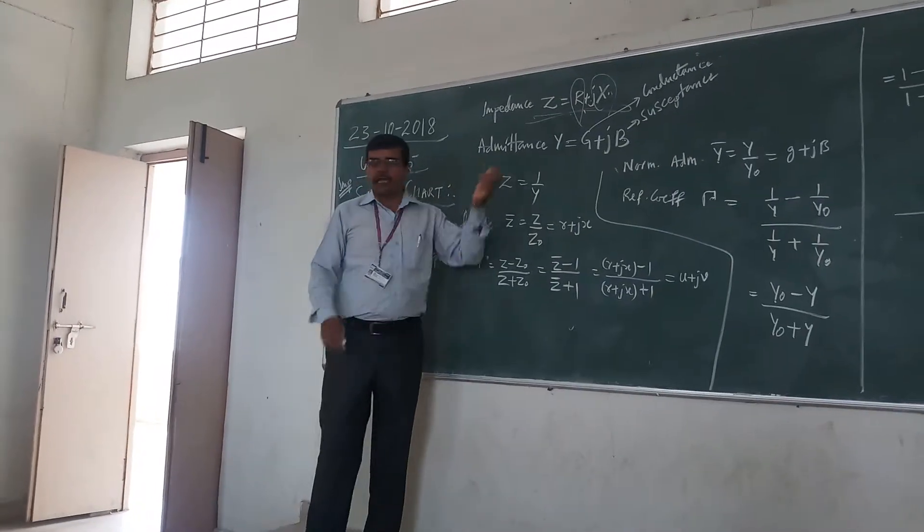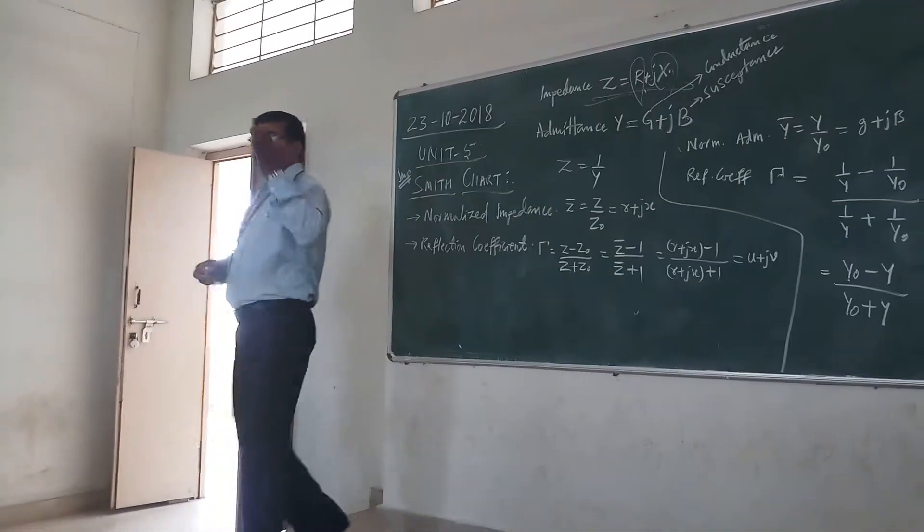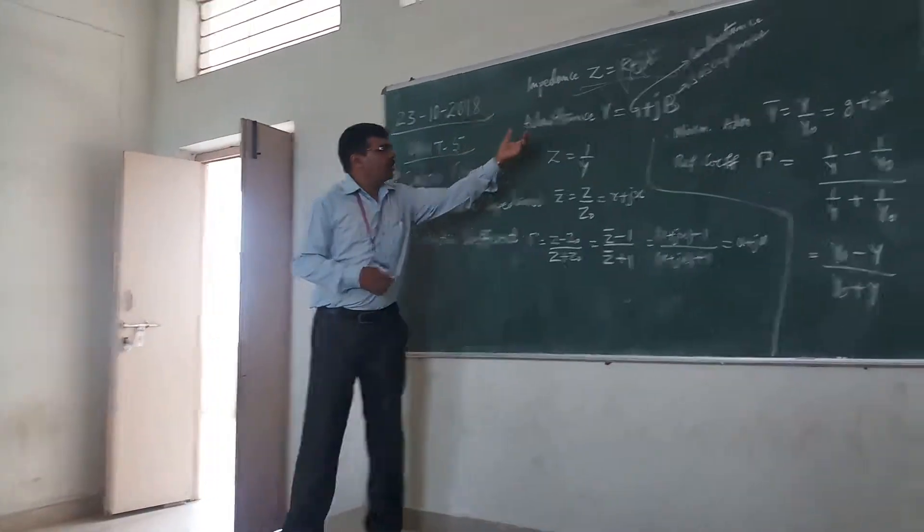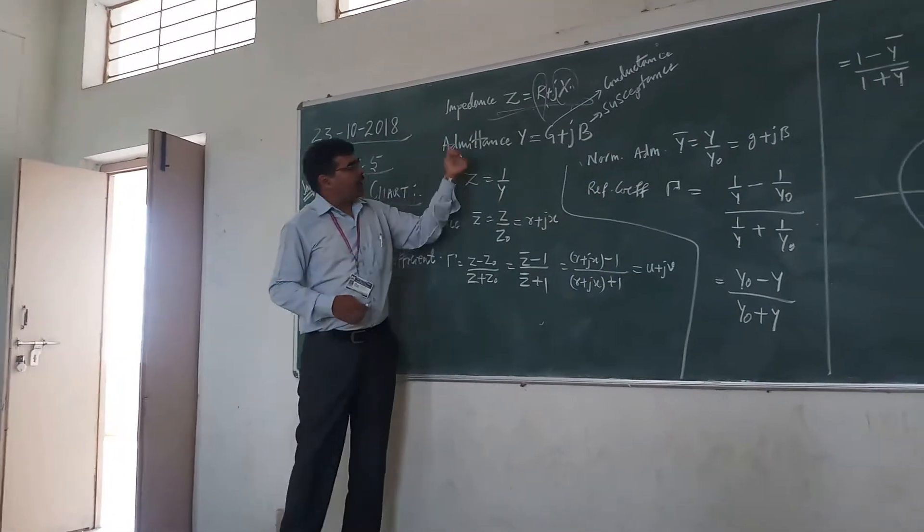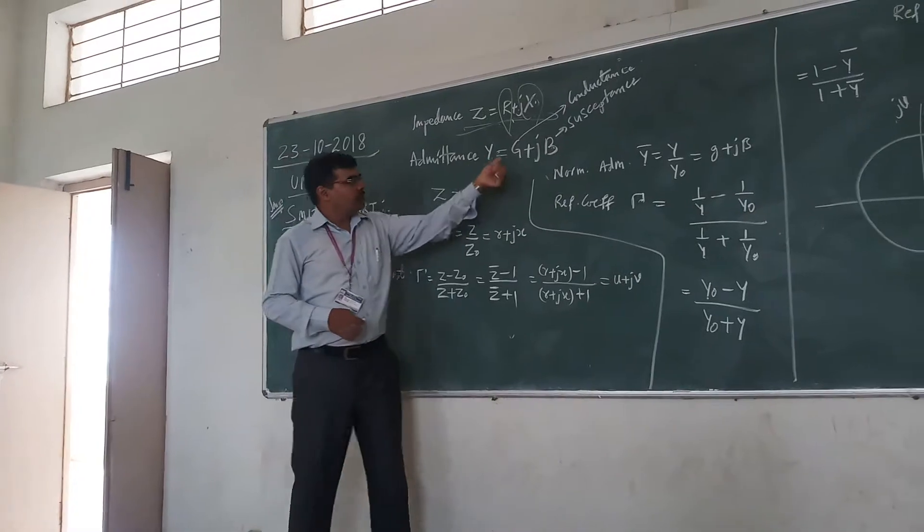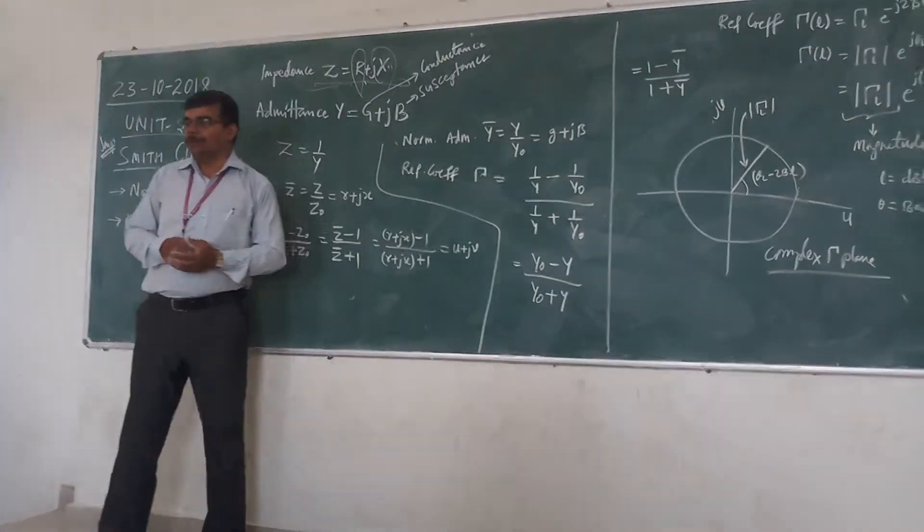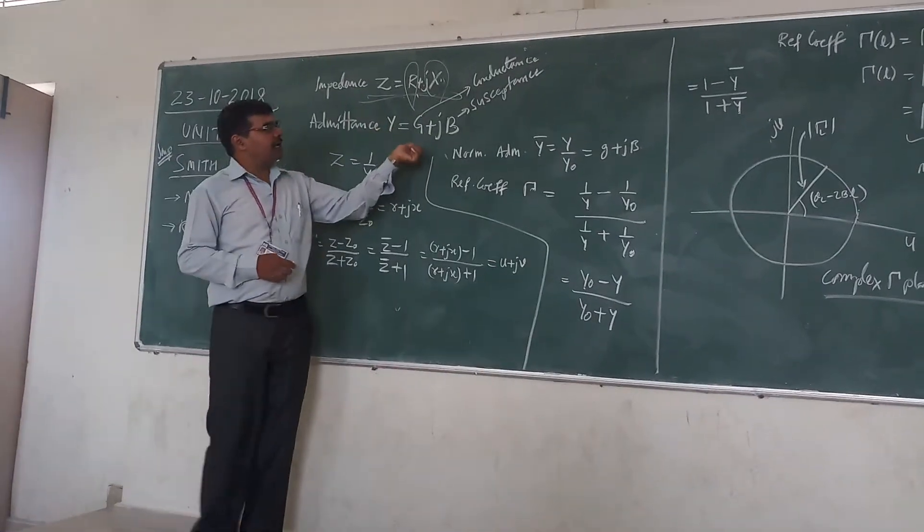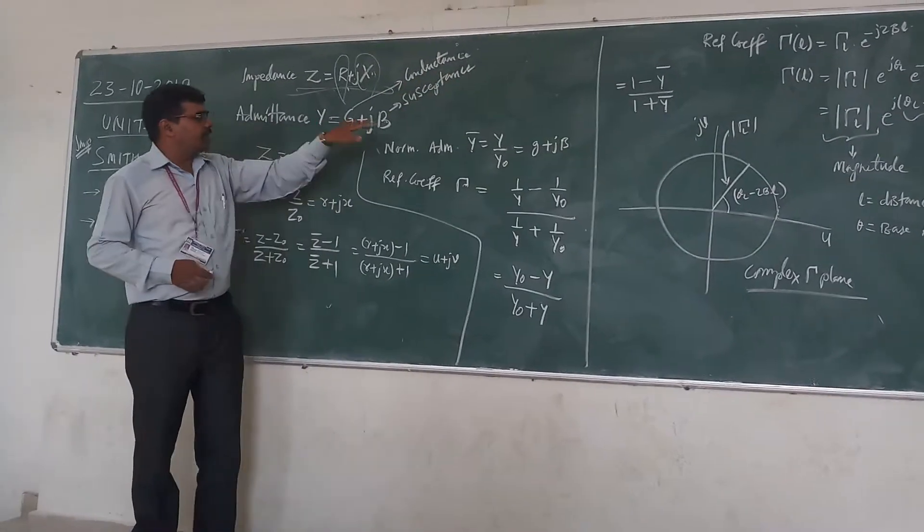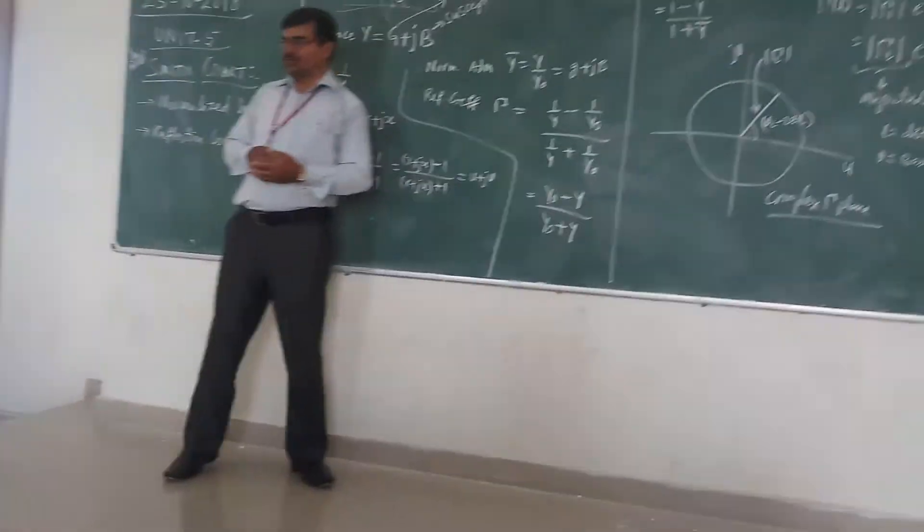In case of parallel transmission lines, we need to work with admittance. Your admittance Y is equal to G plus jB. Here, G is conductance and B is susceptance.